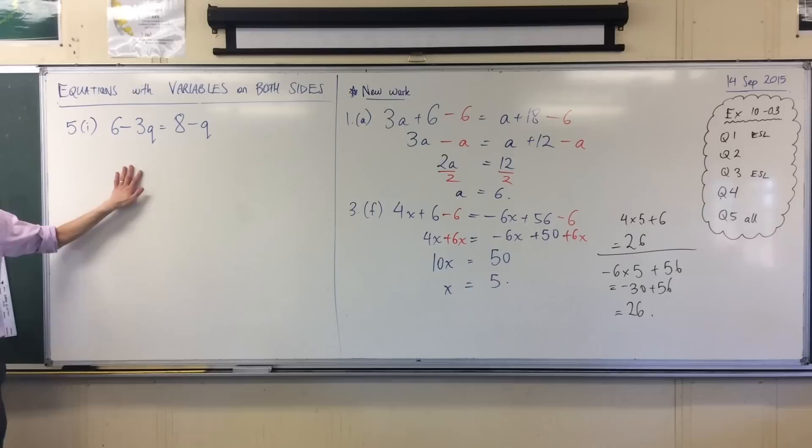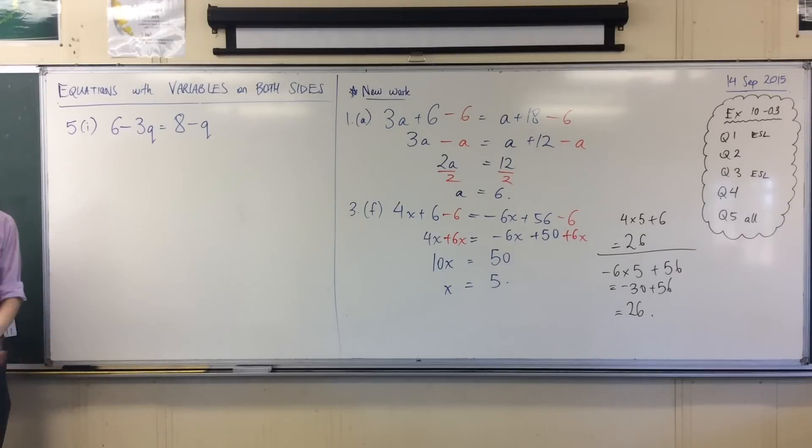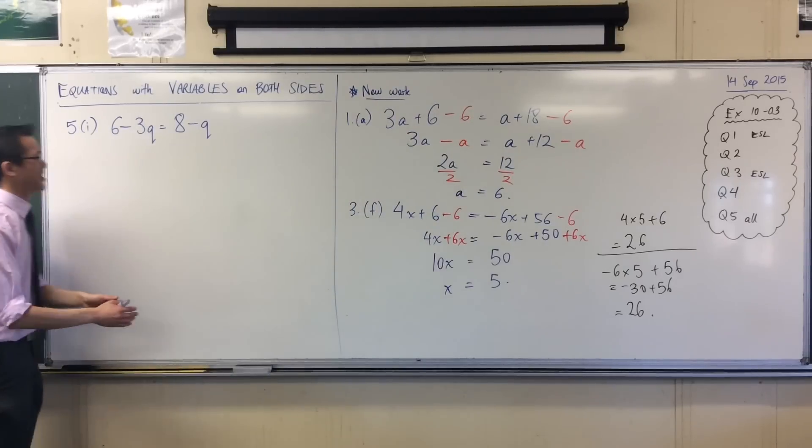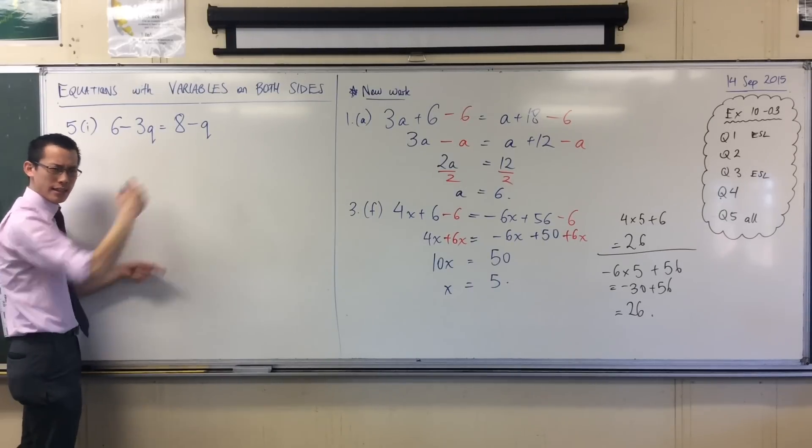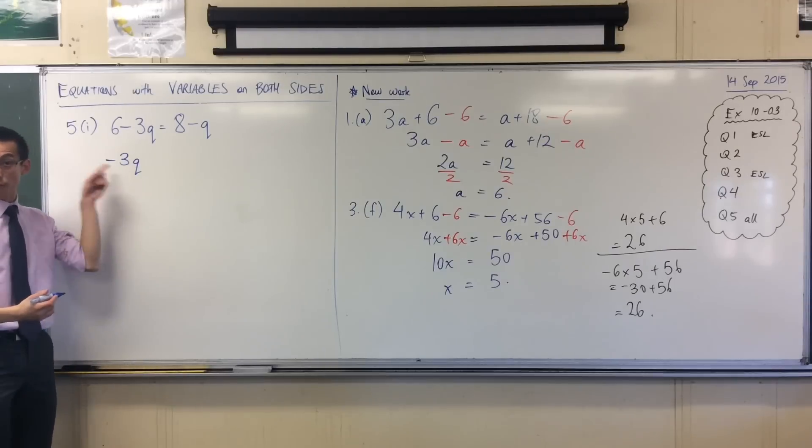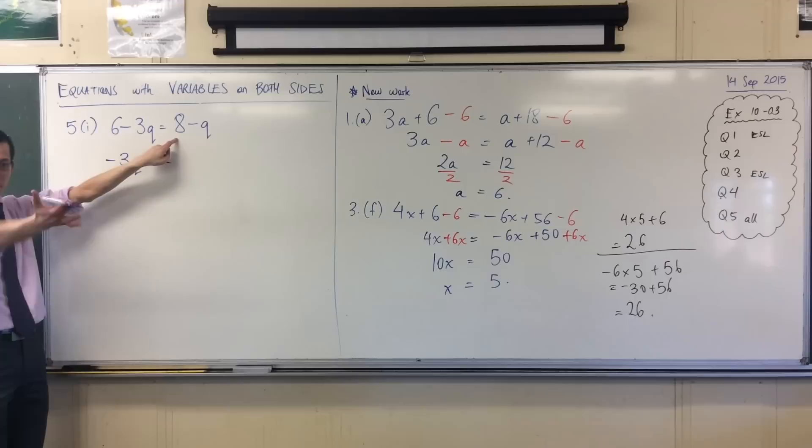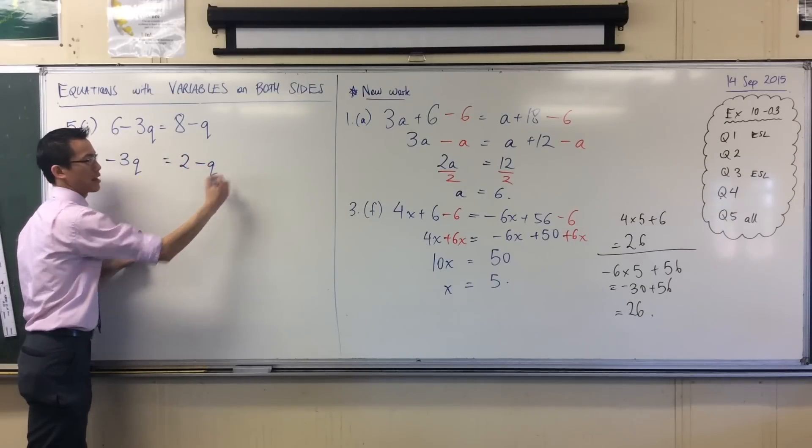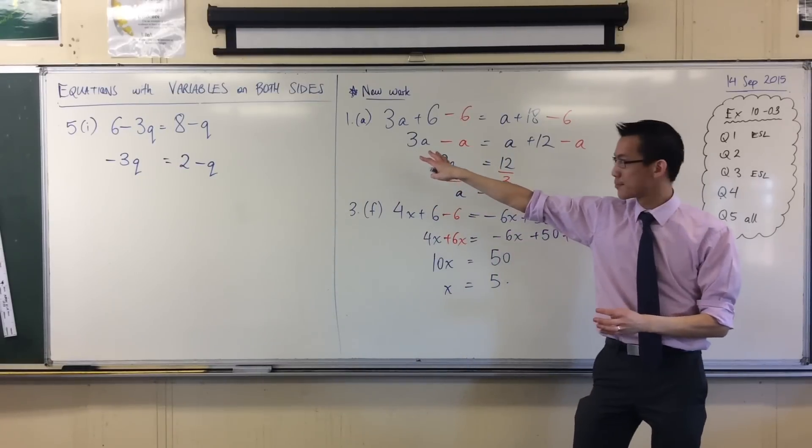Last example we'll do on the board together. This time, I will ask you to pick up your pens and do this with me because it's a little bit different. There's something a bit sneaky about it. You suggest minusing 6. I've got this plus 6 over here. I don't really want it there. I'm going to get rid of that. If I take away 6 here, I should take away 6 here. That'll become nothing. I just get left with minus 3Q. Don't forget the minus sign. It makes all the difference. When I take away 6 from this part, 8 take away 6 is 2, take away Q.